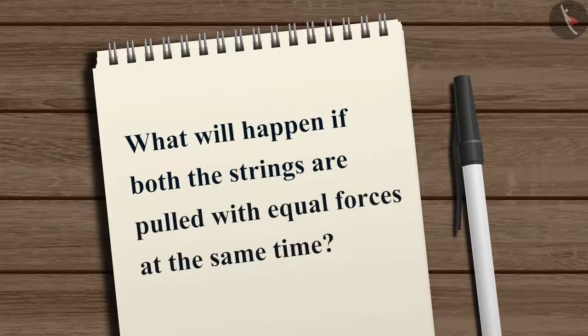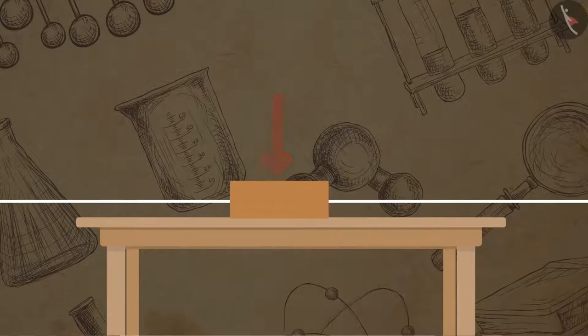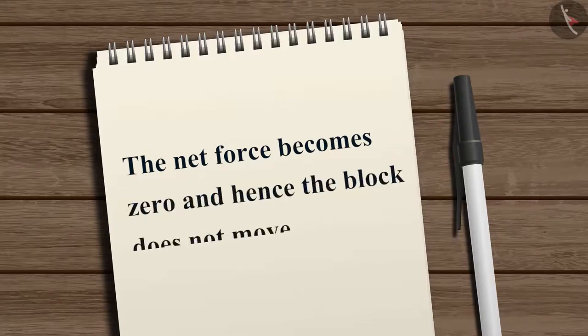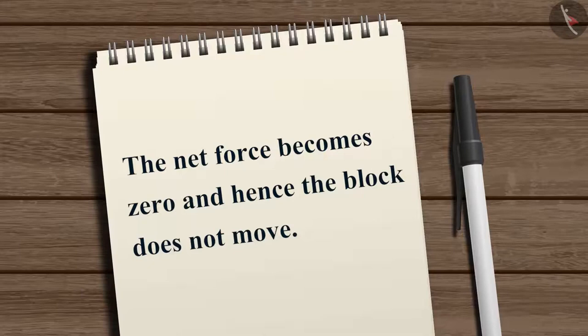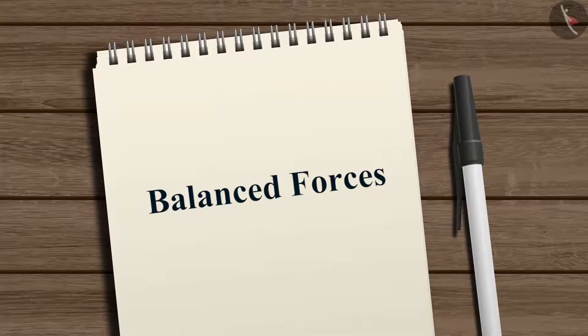But what do you think will happen if both these strings are pulled with equal forces at the same time? Think about it. That is correct, the block will not move to either side. Since the block is pulled in two opposite directions with equal forces at the same time, the net force becomes zero and hence the block does not move. Such forces are called balanced forces. Here, no changes in the state of rest is observed.